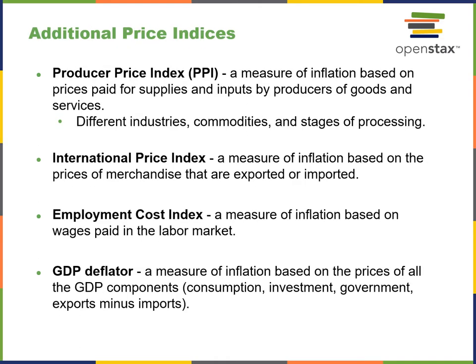Other terms you'll want to know for the test: PPI — the Producer Price Index — is the cost of processing, commodities, and all inputs needed to create a good. The international price index covers essentially the buying power from one country to another, also expressed as currency exchange rate and relative cost of goods. The Employment Cost Index is a measure of inflation based on wages. The GDP deflator is based on prices of all GDP components: consumption, investment, government, and exports minus imports.